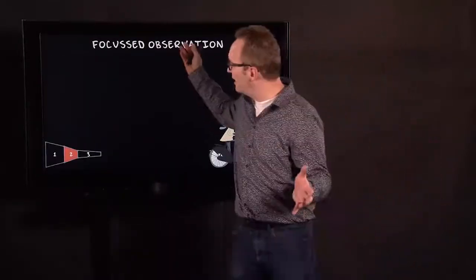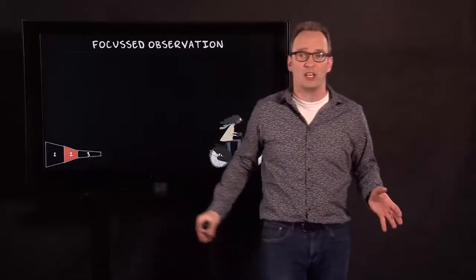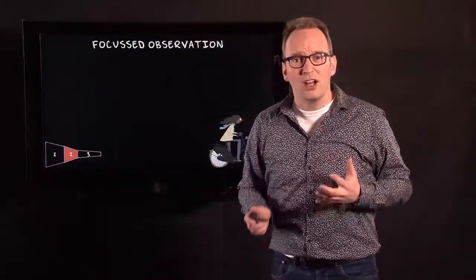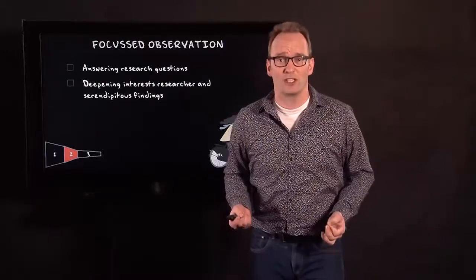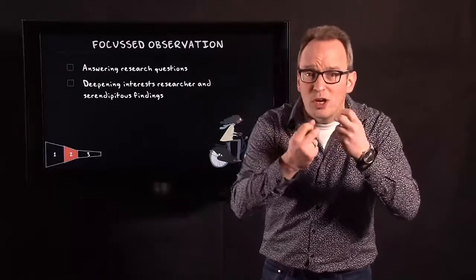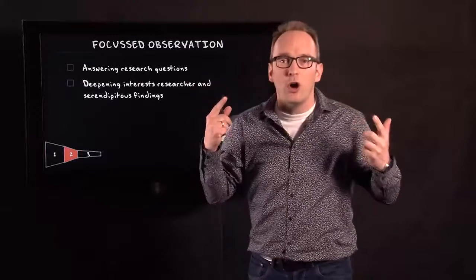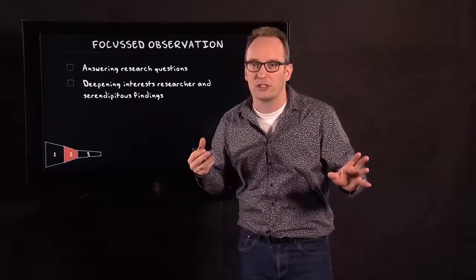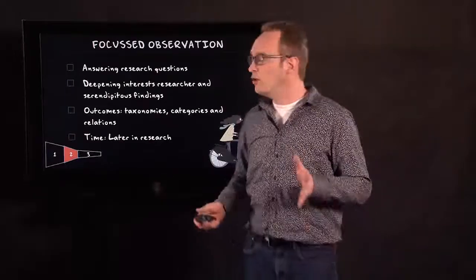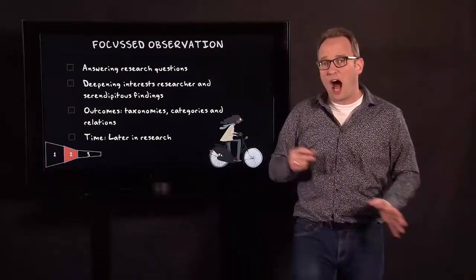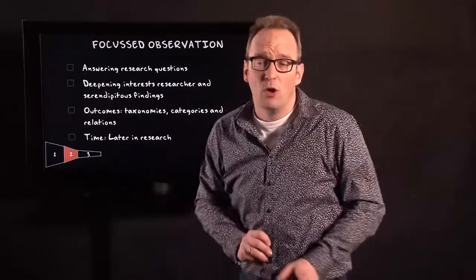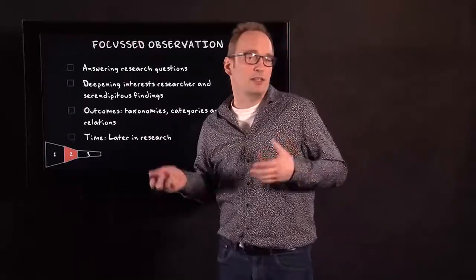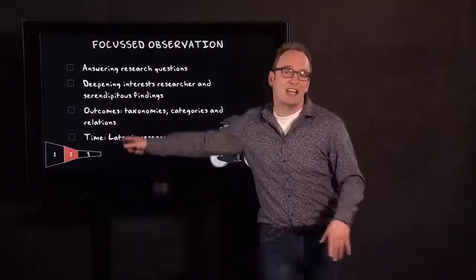The second step in observation according to Spradley is focused observation. In this focused observation, you step away from your car and get onto a bike. You start watching more specifically — you try to answer your research question, deepen your interest as a researcher, and continue on serendipitous findings. For instance, you found something really striking about how these men talk to customers, and you think you have to really look into that. So you probably start creating taxonomies: how these men talk to women versus men, or how they talk to potential clients versus people who are surely not buying. And obviously, this happens later on during the research.